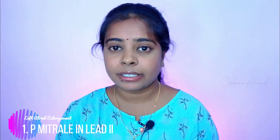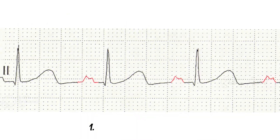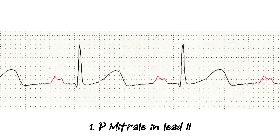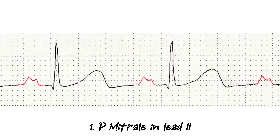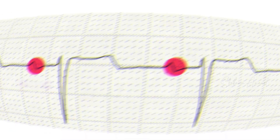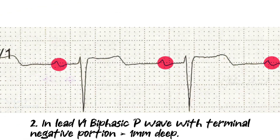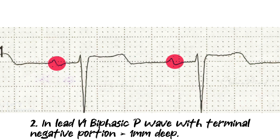Now let's see the P-wave changes in left atrial enlargement. The first criteria is P-mitrale in lead II — a broad and wide P-wave. The second criteria is a biphasic P-wave in lead V1, with the negative portion more than 1 mm deep.